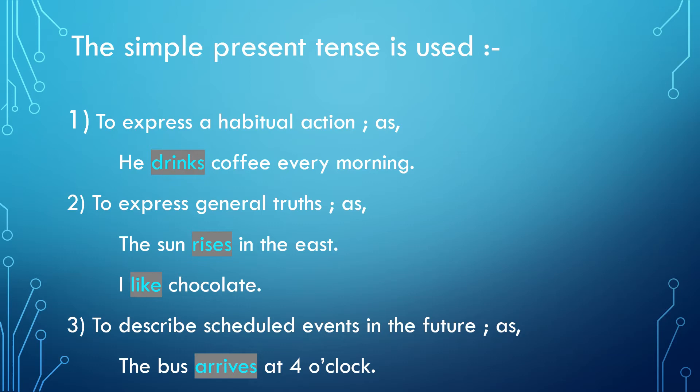In another case, to describe scheduled events in the future, we again use the simple present tense. For example: 'The bus arrives at 4 o'clock.' When we examine the verb here, it is in the simple present tense form.